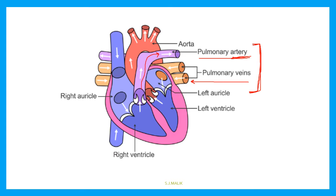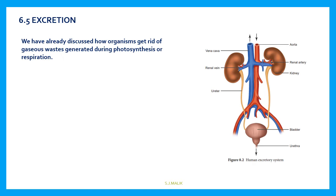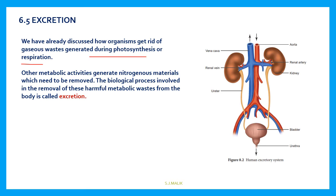Now let us move to excretion. We have already discussed how organisms get rid of gaseous waste generated during photosynthesis or respiration. During photosynthesis, oxygen is generated and that oxygen is waste for the plant. During respiration, CO2 is produced. So this O2 and CO2 leaving the body — that is excretion. Other metabolic activities generate nitrogenous material that also needs to be removed. The biological process involved in the removal of this harmful metabolic waste from the body is called excretion. That is the definition of excretion.